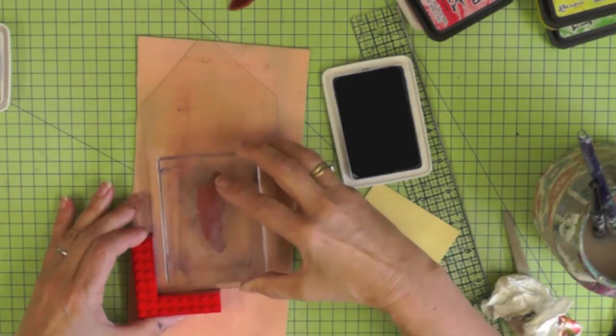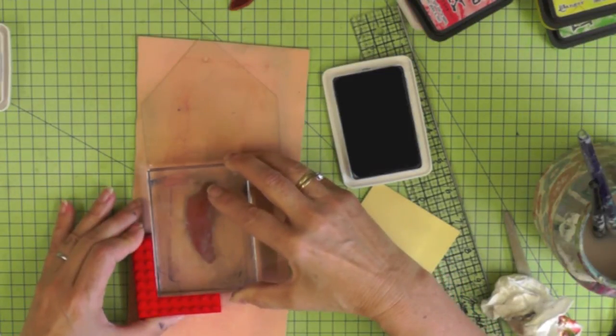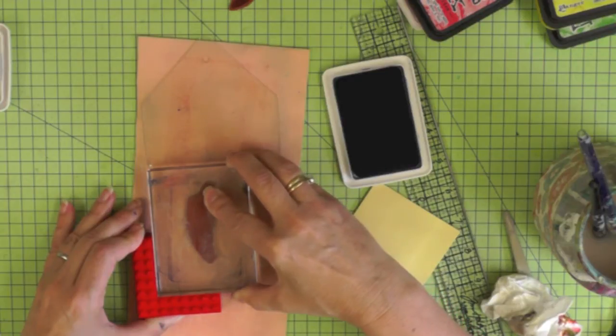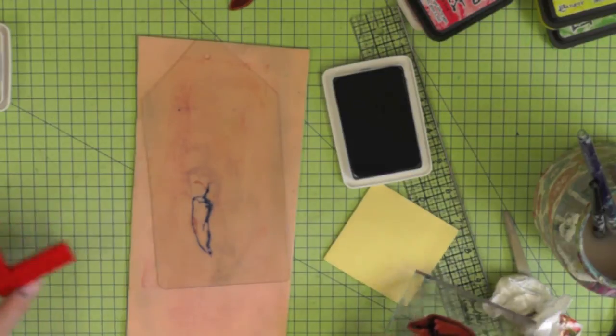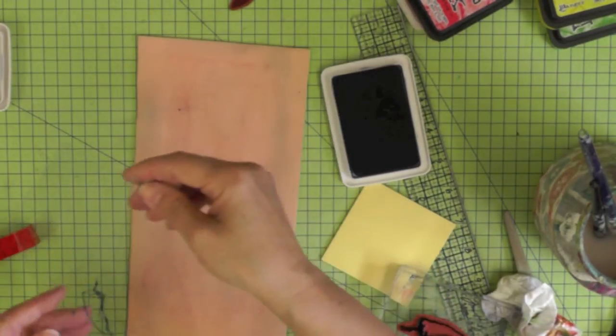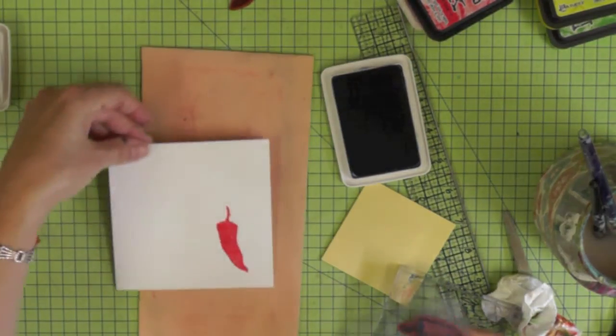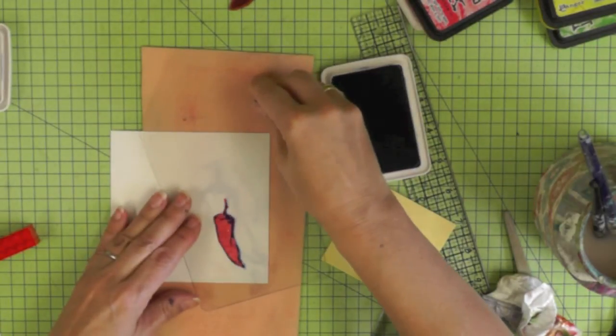You need to nestle your acrylic tag right into the corner of the Lego and you also need to nestle your acrylic stamp block into that L-shape and press down. This little image is going to allow you to line up your chili stamp right on top of your red chili.